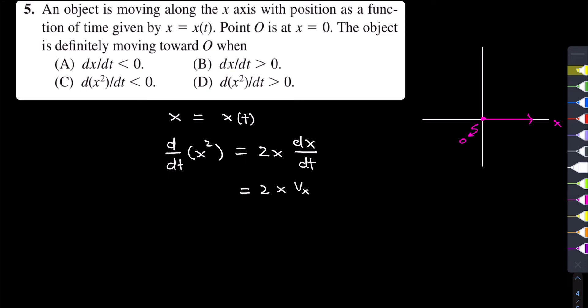Now, the derivative of x squared is the product of the position and its velocity along the x-axis.